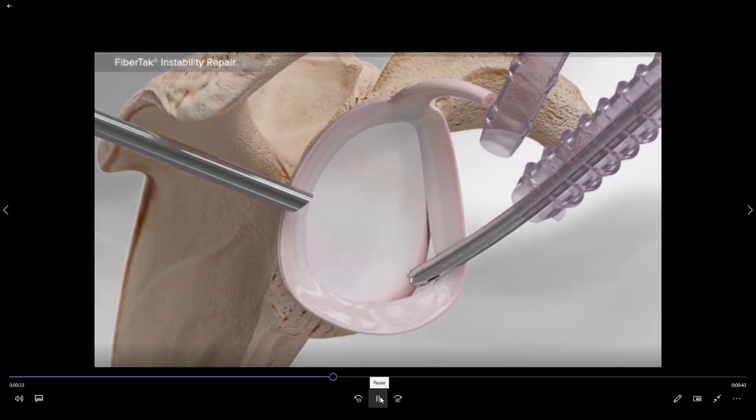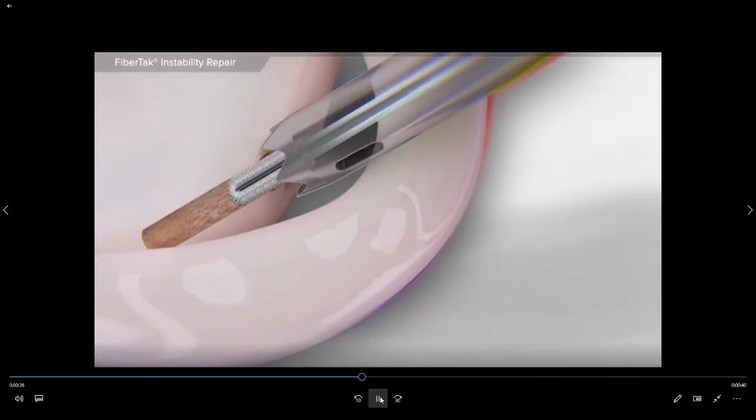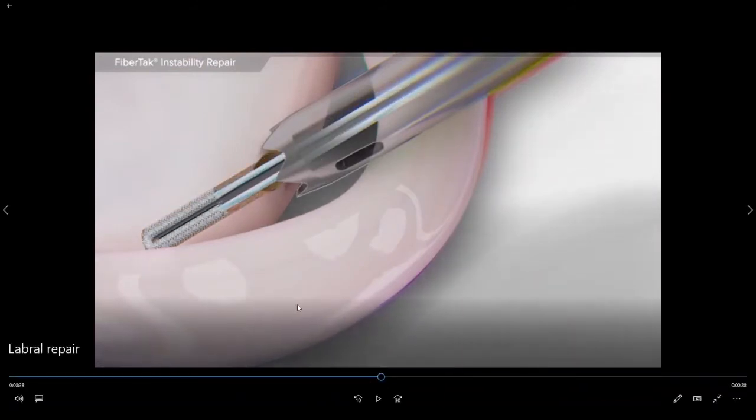We drill a 1.8 millimeter hole into the bone. After drilling the hole we place the implant. The implant is malleted into the bone and this is what we call an all suture implant meaning that there's no metal or plastic in this implant to keep this implant down and into the bone.